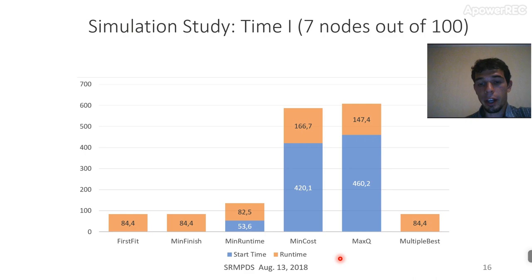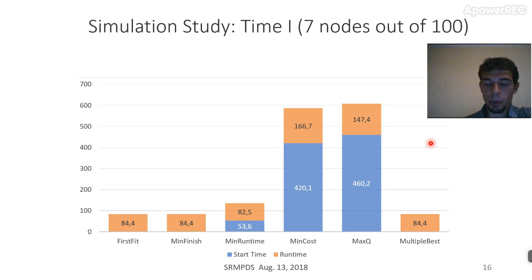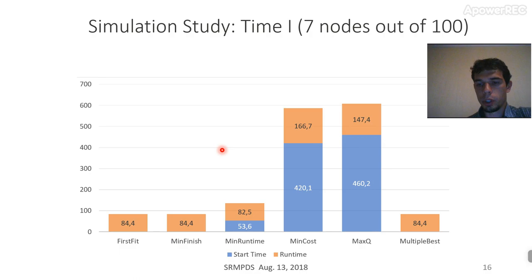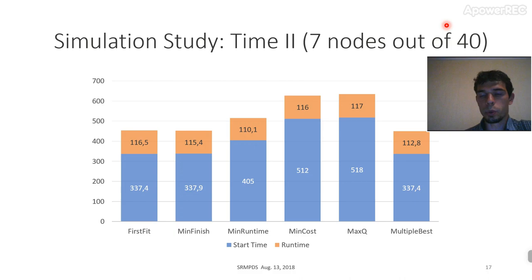Algorithms like min-cost and MaxQ, which don't perform time optimization, have start time somewhere in the middle of the scheduling interval because they can only find their best values there. One point here is that with 100 nodes, first-fit and min-finish algorithms work like identical algorithms. So on the next slide, we perform the same algorithm on an environment with only 40 nodes.